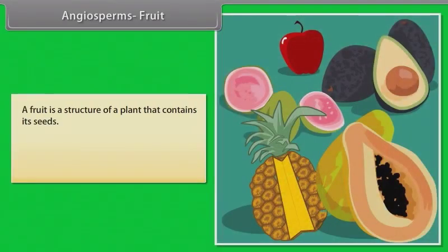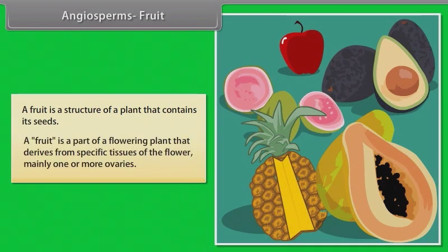A fruit is a structure of a plant that contains its seeds. A fruit is a part of a flowering plant that derives from specific tissues of the flower, mainly one or more ovaries.